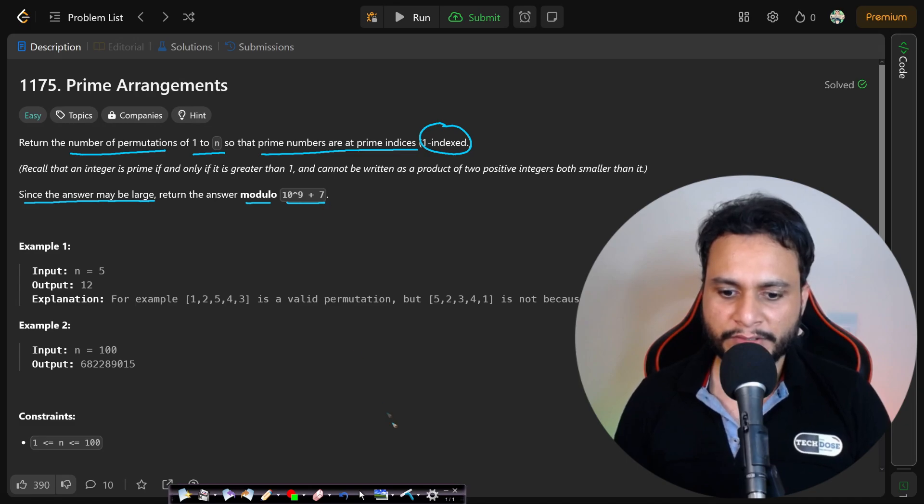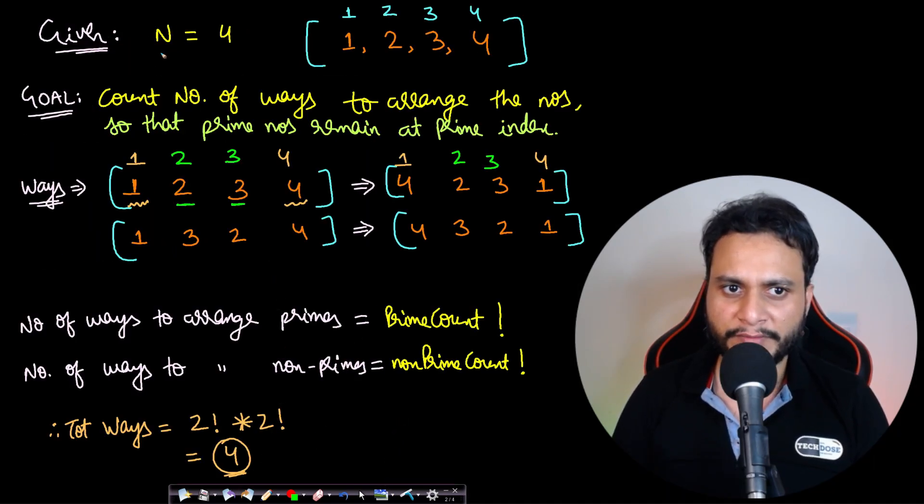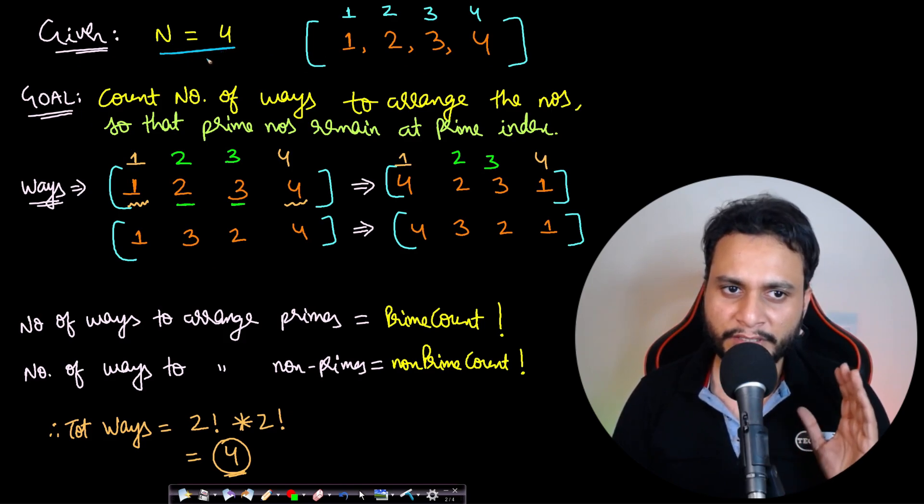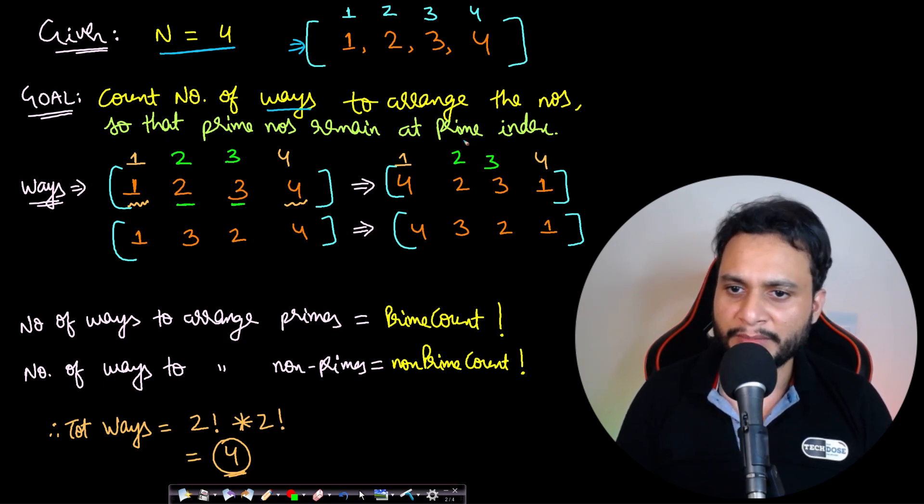Let's take an example for better understanding. Say our given n value is 4, so we think about numbers from 1 to 4. I've represented it as a list. What they're asking is: in how many ways can we arrange the numbers so that prime numbers remain at prime indices?